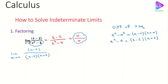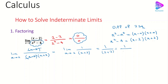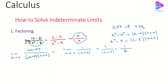Now we can cancel (x minus 2) on the top and bottom. The result is the limit as x approaches 2 of 1 over (x plus 2). Plugging in 2, we get 1 over (2 plus 2), so the answer is 1 over 4.